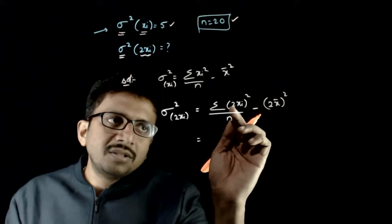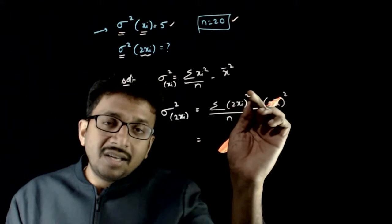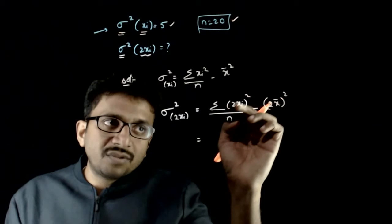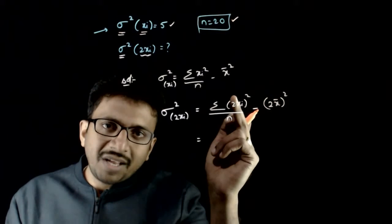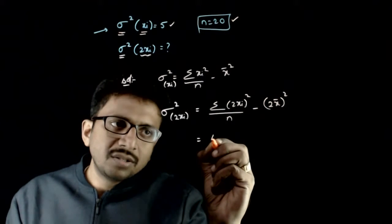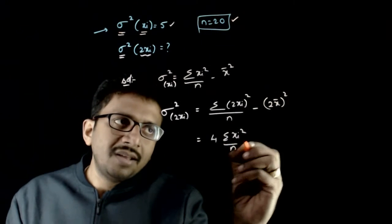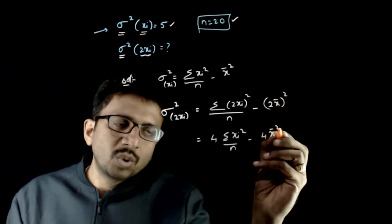That is equal to, if you take the square outside, that is 4xi square. So the multiplication 4 gets outside. 4 times sigma xi square by n minus 4x bar square.